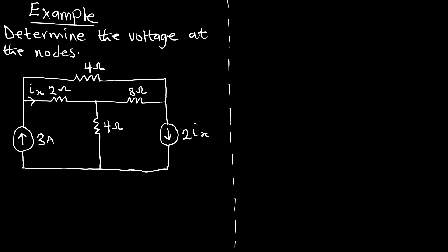Welcome to Einstein's Mechanics. In today's episode, we are going to solve a problem using nodal analysis without a voltage source. In this example, we are to determine the voltage at the nodes, and we have our circuit nicely drawn.